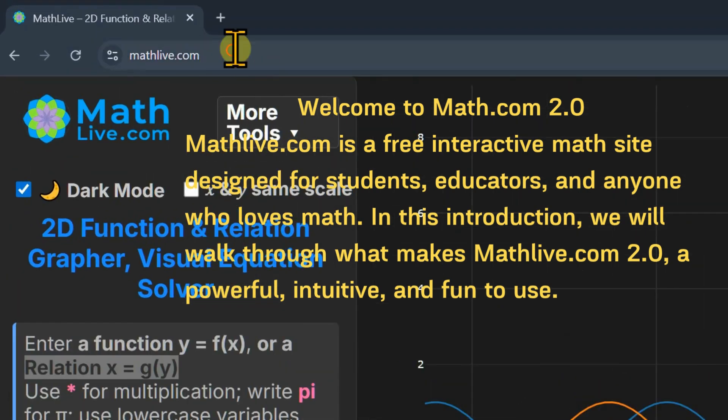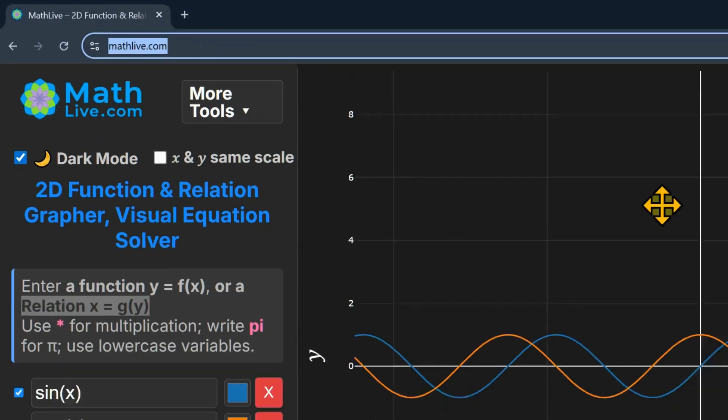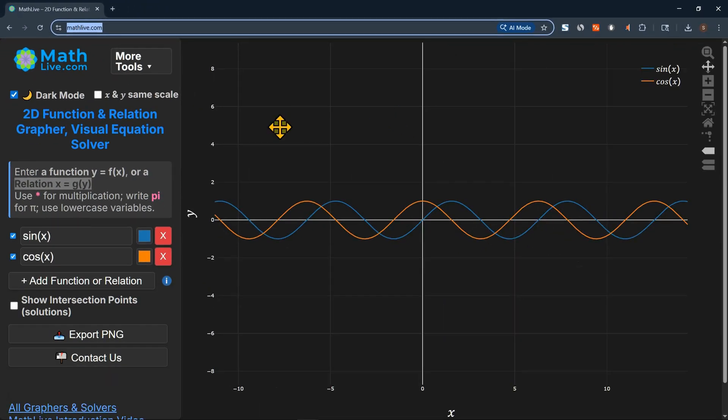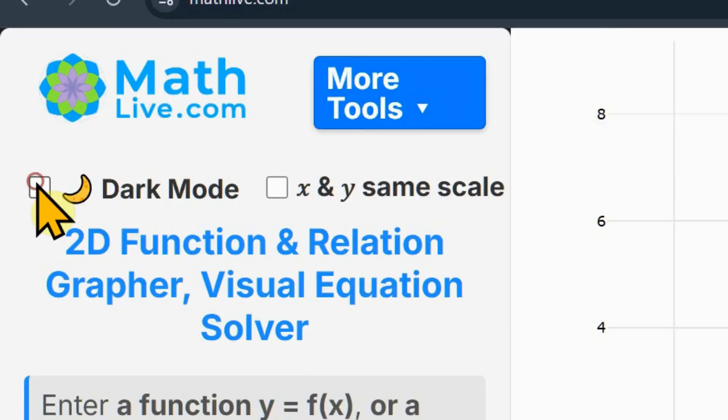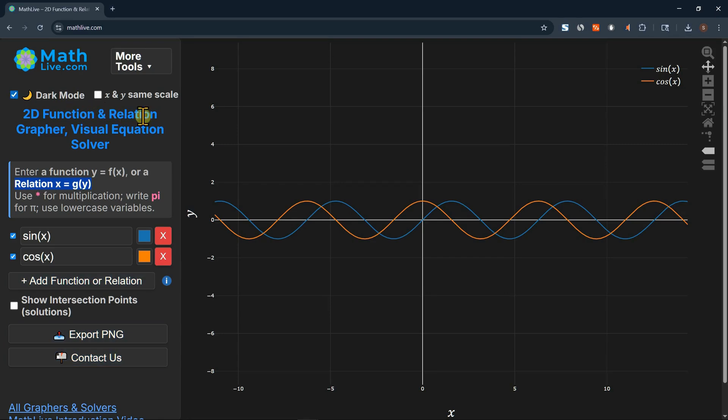As you type MathLive.com in the address bar in your browser, MathLive will load in a dark mode as shown. If you are more comfortable in the light mode, you just uncheck this check mark here, and now you are in the light mode. If you wish that your x-axis and the y-axis to have the same scale, we just check this check mark.